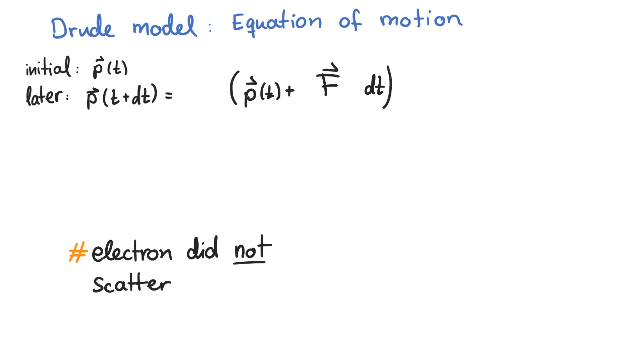That expression has to be multiplied with the probability that the electron did not scatter. When the probability of scattering is dt over tau, then the probability of not scattering is 1 minus dt over tau.